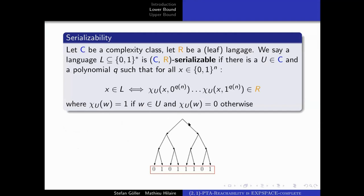Picture an NP Turing machine where at each step you have precisely one guess between zero and one. You can see the arborescence of its computation as a complete binary tree of polynomial height. Each path in the tree corresponds to a computation — guessing zero, guessing one, etc. — and each leaf corresponds to the endpoint: colored zero if the computation is rejecting, or one if accepting. Another way of defining complexity classes is to look at this leaf string and check whether it belongs to some language R.